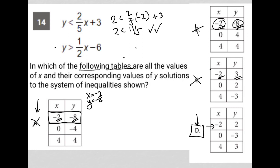For the second inequality, I'd have 2 is greater than 1 half times negative 2 minus 6. So I'd have 2 is greater than negative 7. That is also true. So we have this first point that actually does work.